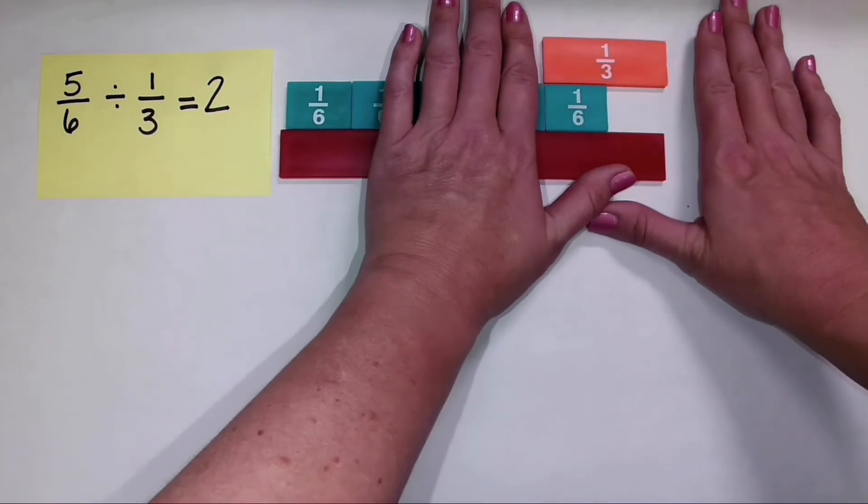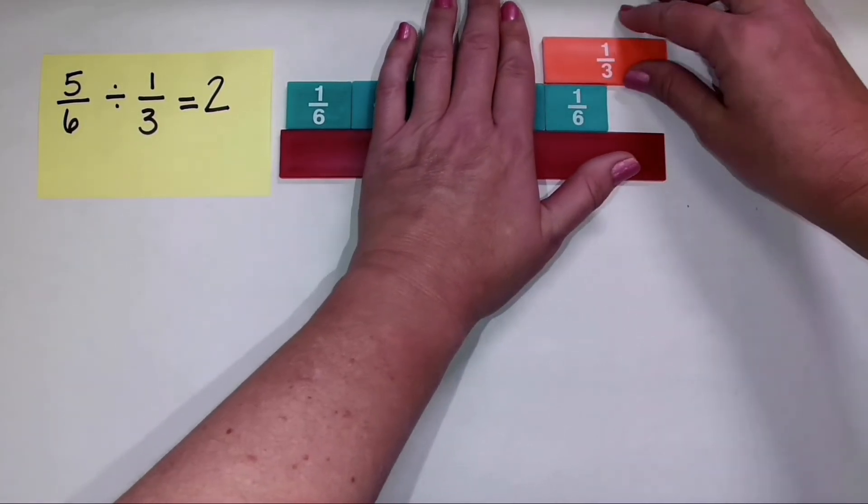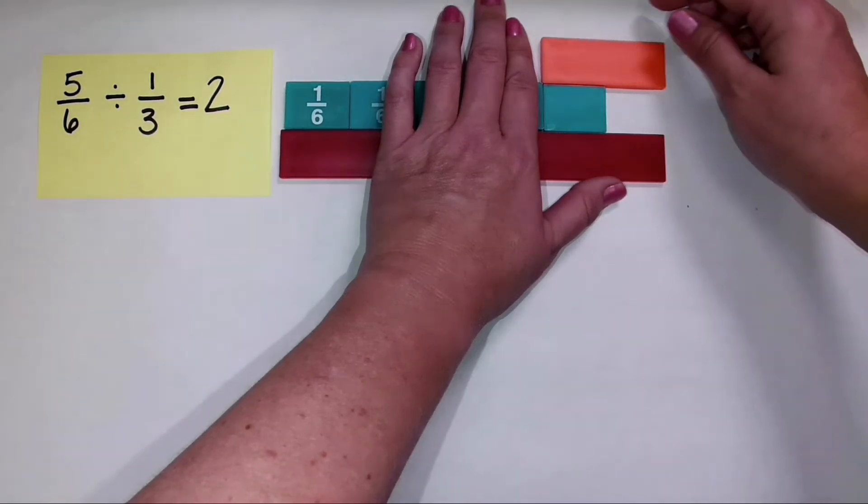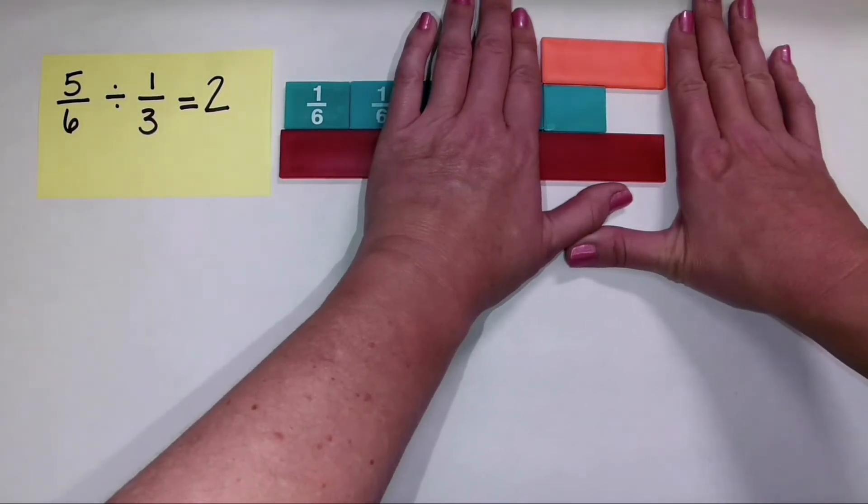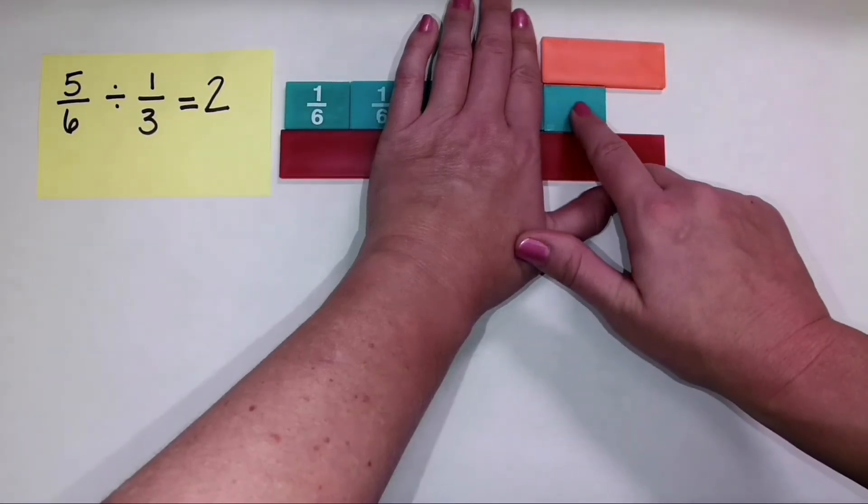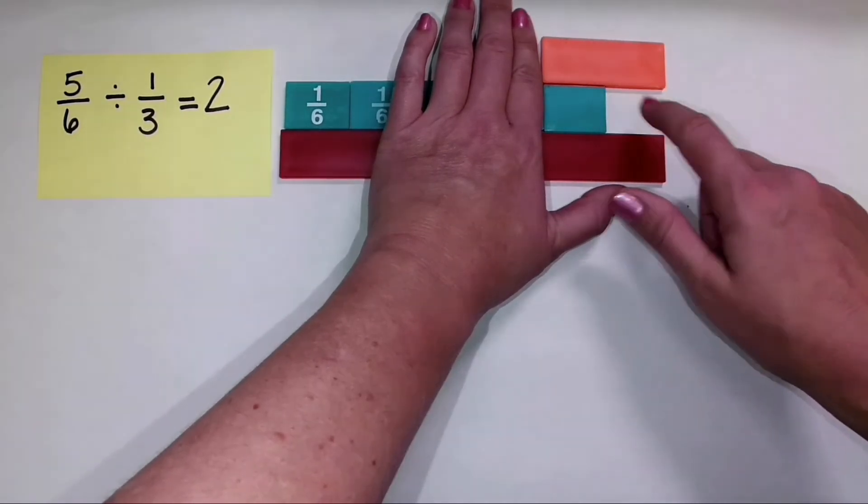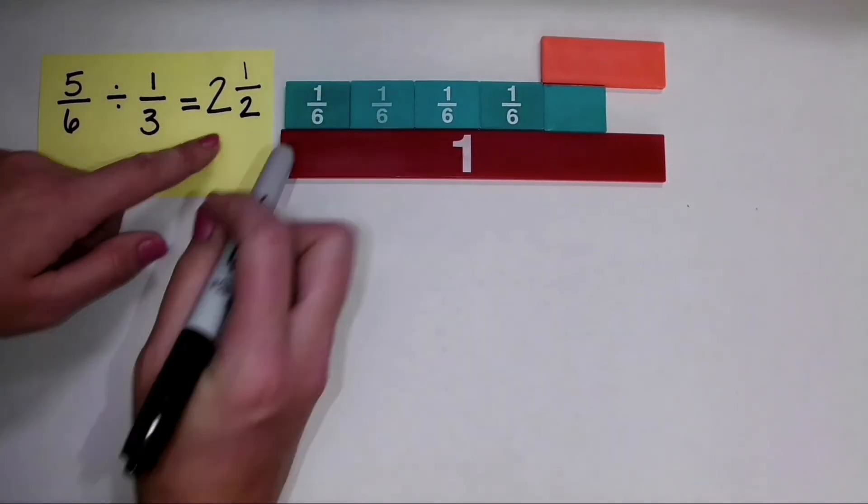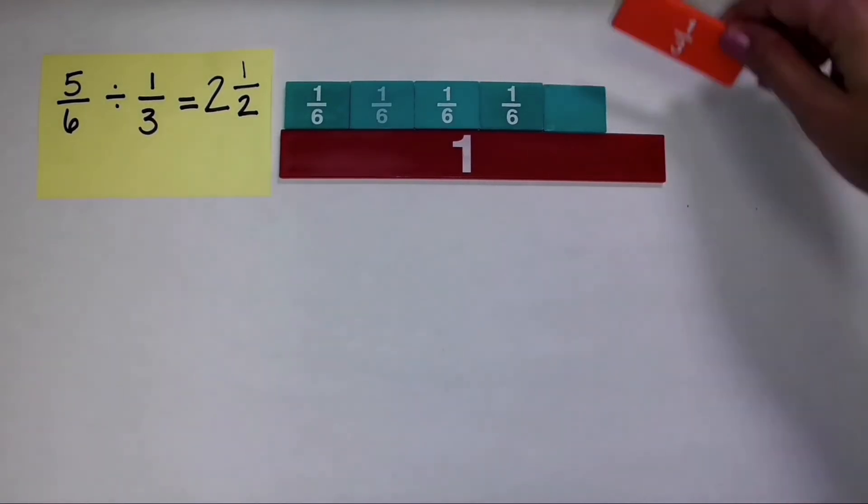Don't look at these numbers right now that are printed on these fraction tiles. And in fact, it might be easier if I turn them over like that. So how much of this group of one-third can I make? We can make one-half of this one-third group. So I can make one-half of the next group of one-third.